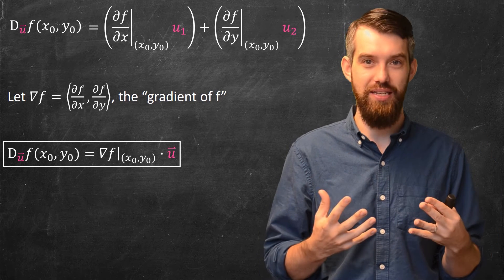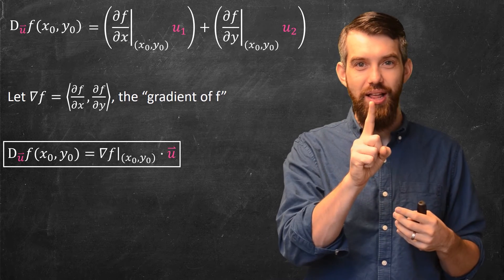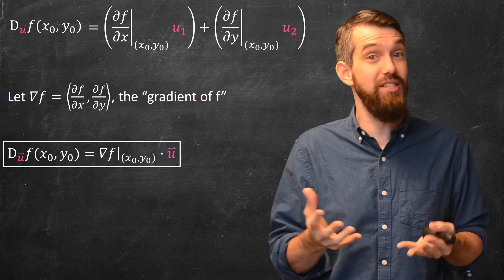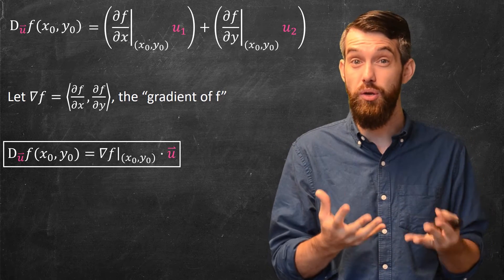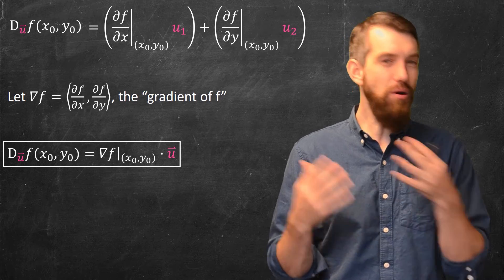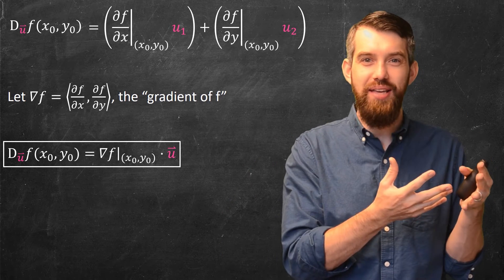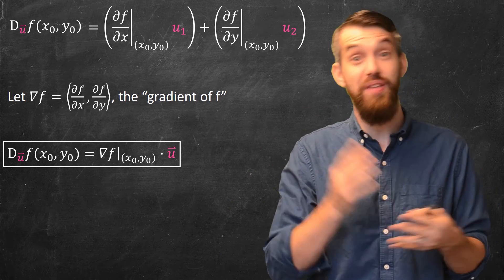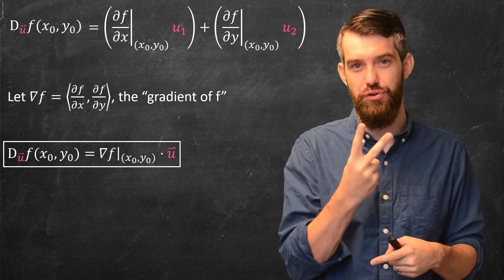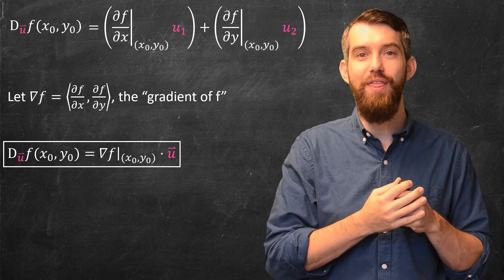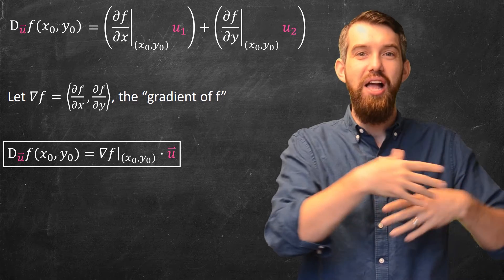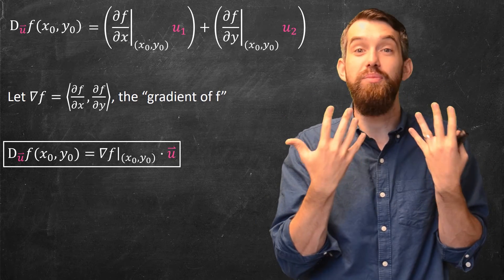So the directional derivative with respect to u of f at the point (x₀, y₀) is simply the dot product of the gradient and the direction vector u. The brilliance is that this is easily computable — just partial derivatives and a dot product. Furthermore, the partial derivatives gave us directional derivatives in the x and y directions, and after having just those two, you can find any other directional derivative by dotting u with the gradient.